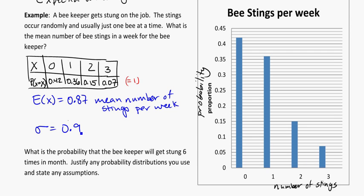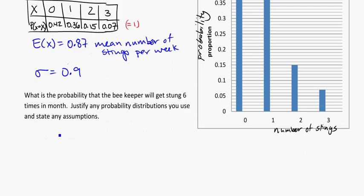Now that we've figured out the expected value and our sigma, we've got a second question being asked here. What is the probability that a beekeeper will get stung six times in a month? Justify any probability distributions you use and state any assumptions. That's kind of giving us a hint that we might want to think about using binomial or Poisson or normal or something.